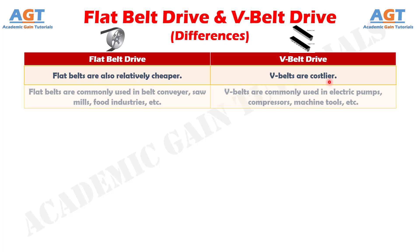Difference number 14: flat belts are commonly used in belt conveyors, saw mills, food industries, etc. Whereas V-belts are commonly used in electric pumps, compressors, machine tools, etc.